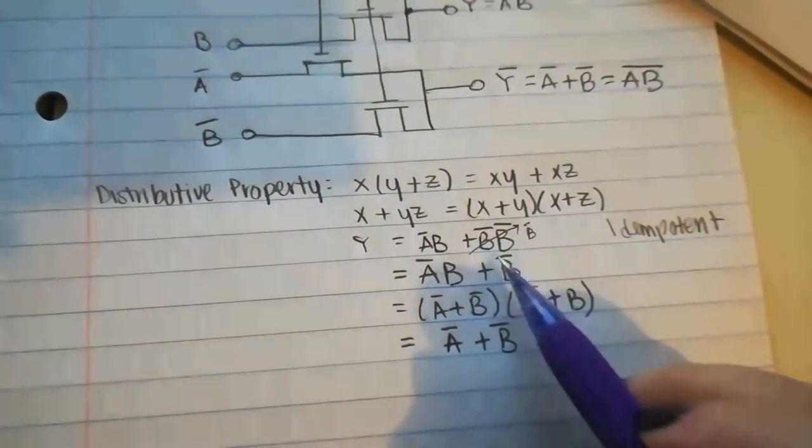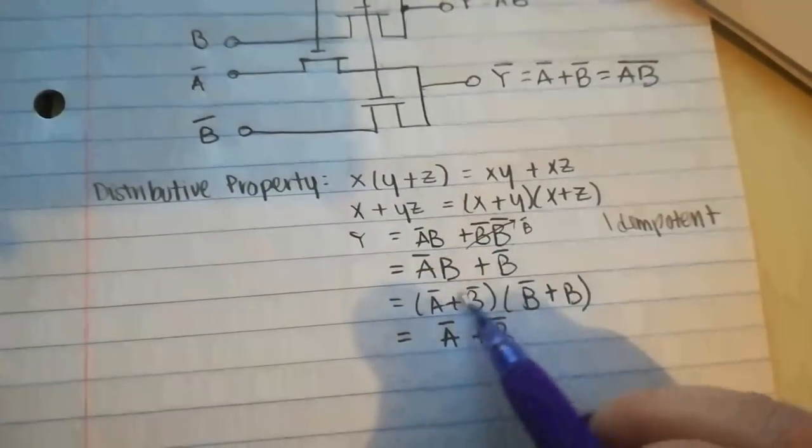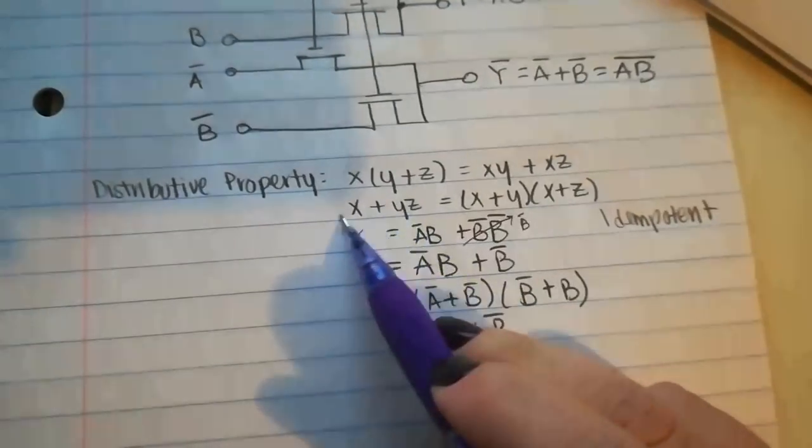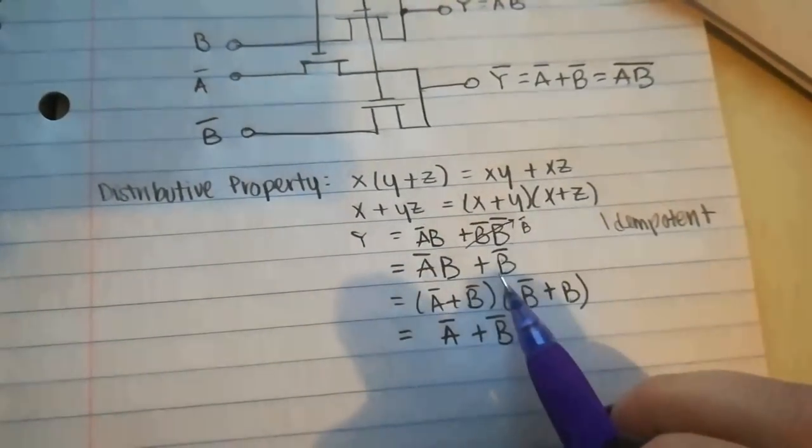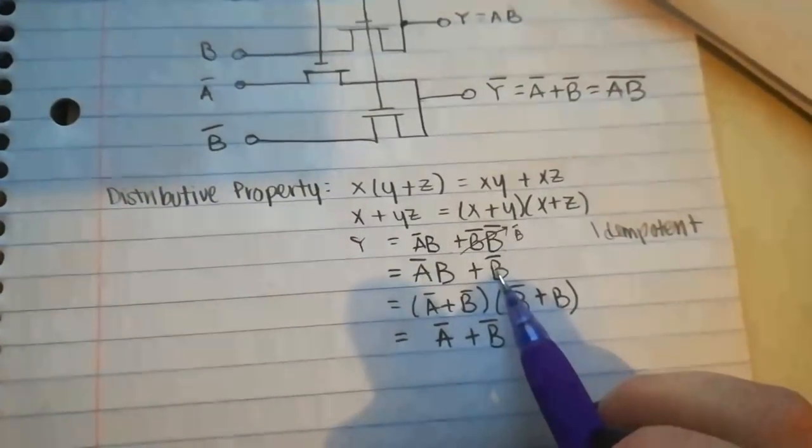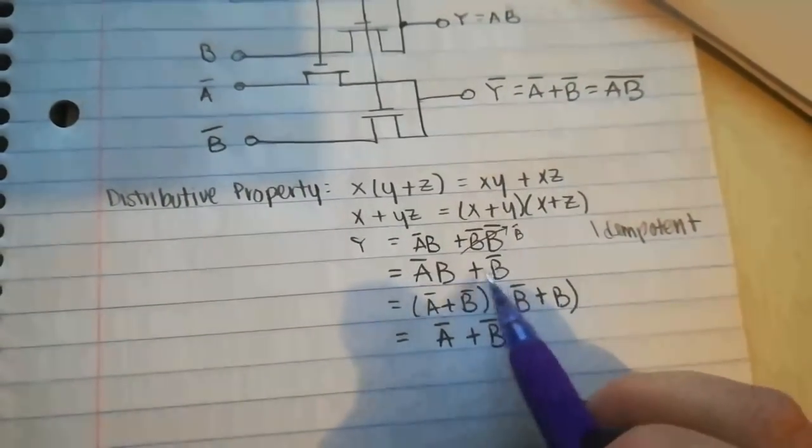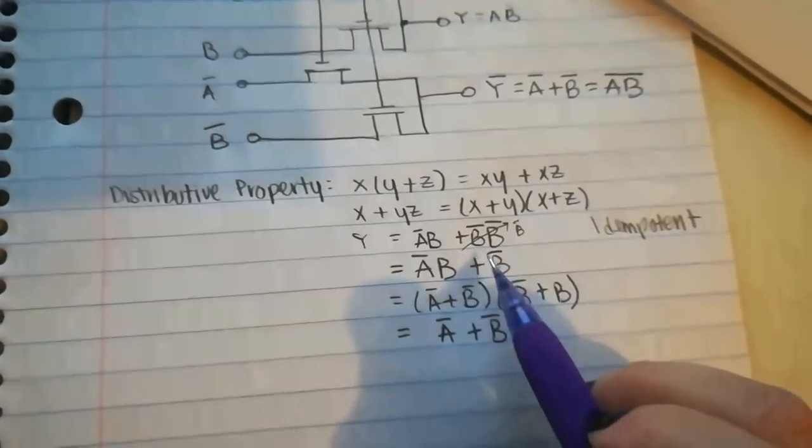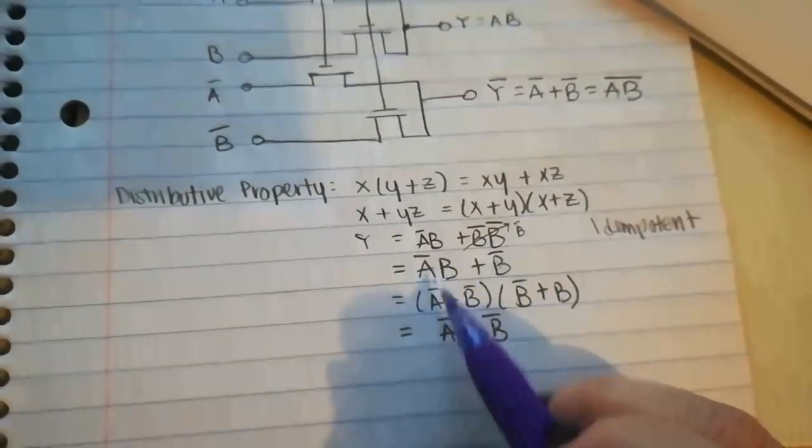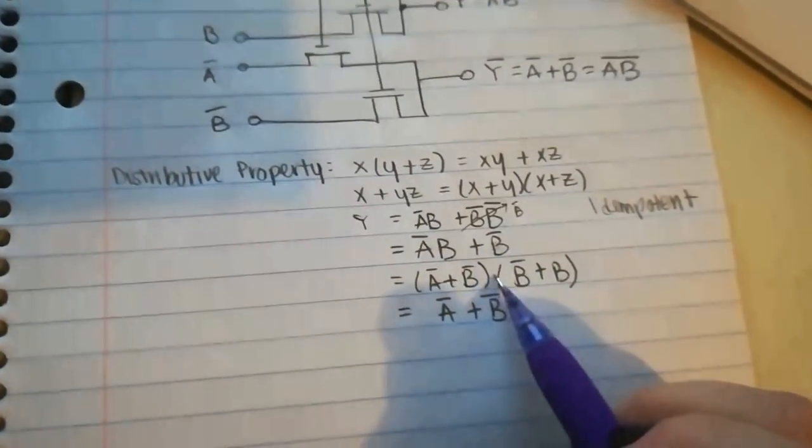So now this transforms into this, going from here to here. Let's go step by step: B̄ times plus B is one parenthesis, and then B̄ plus Ā is one parenthesis. So both parentheses.